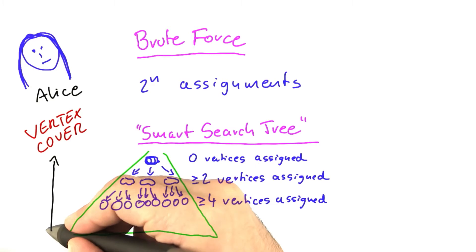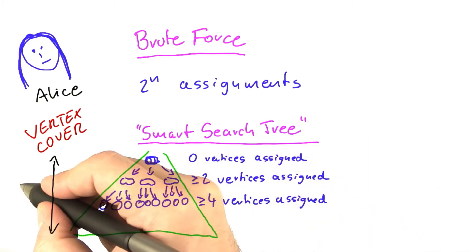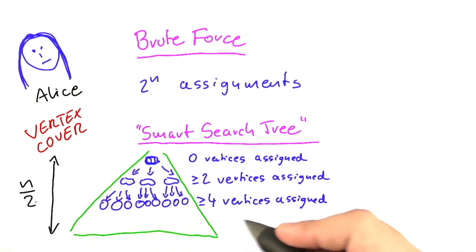One is that the number of levels that we have can be at most n half. Because every time we assign at least two vertices. So n and a half levels is the maximum number of levels that we can have because after that all vertices have been assigned.